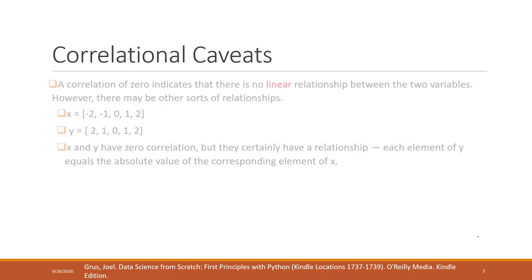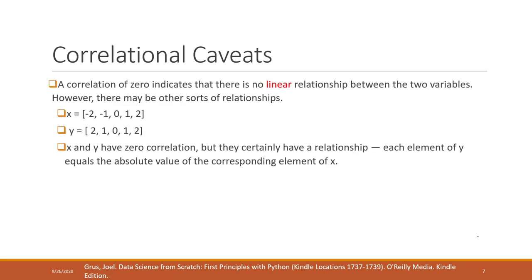Something to keep in mind: first, the correlation coefficient only captures the linear relationship. If two variables have a zero correlation coefficient, it just means they have no linear relationship. For example, if Y equals the absolute value of X, the correlation coefficient will be zero — but it doesn't mean they are not related. They are still related, just not in a linear way.